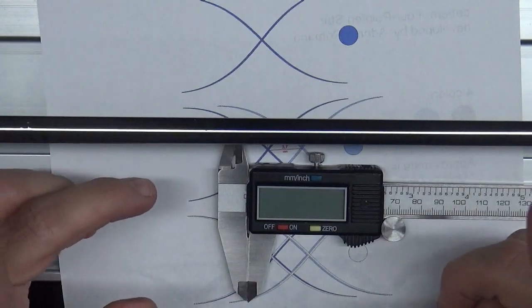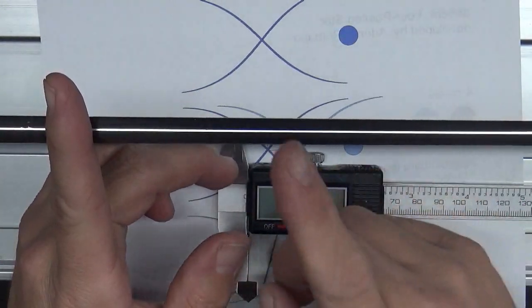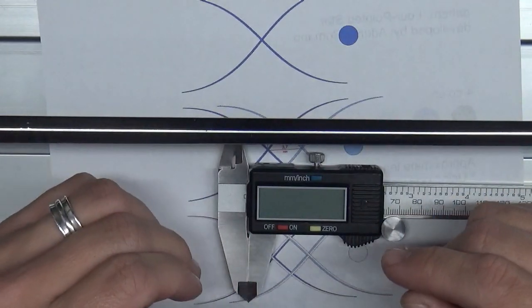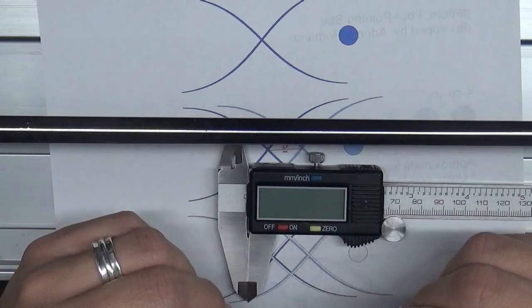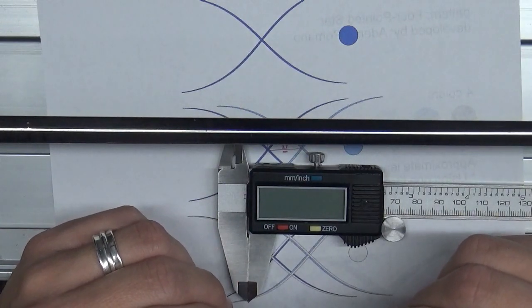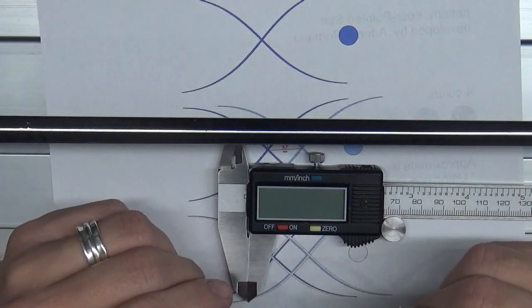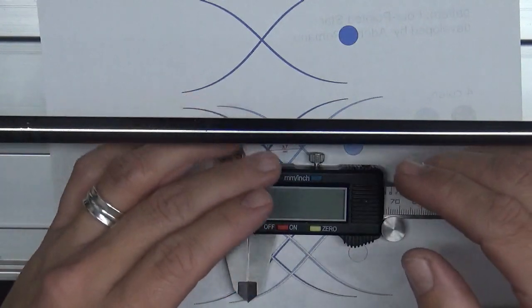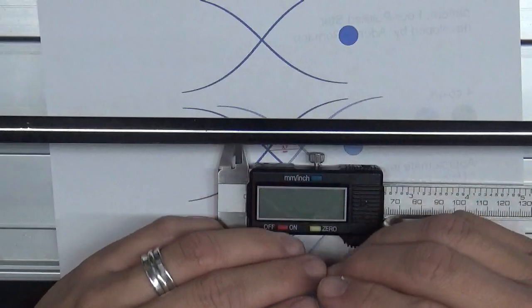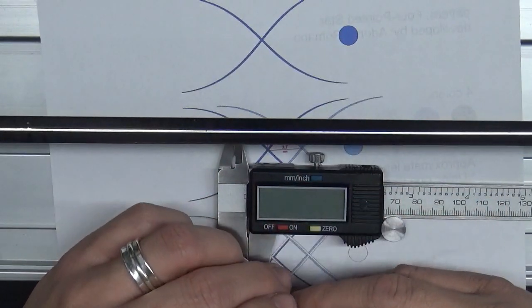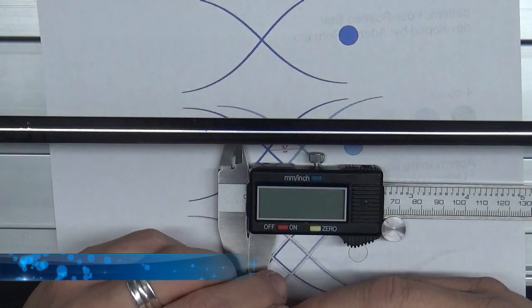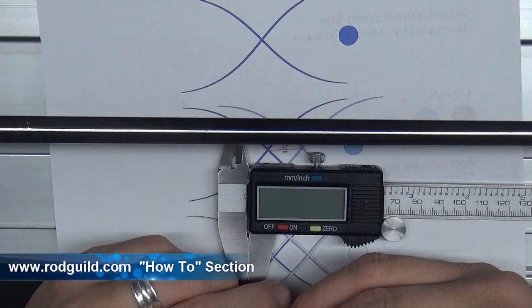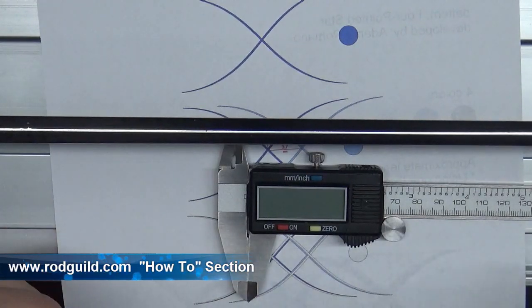Now you come back and you take your measurements from the butt in the middle and the tip. If you're doing this manually, if you have an app or if you have, some people would say visual wrap, that would help you in your spacing. If you don't, you can do it by hand without math. Go to the rodguild.com and in the how-to section you can find an article I wrote on how to do that.